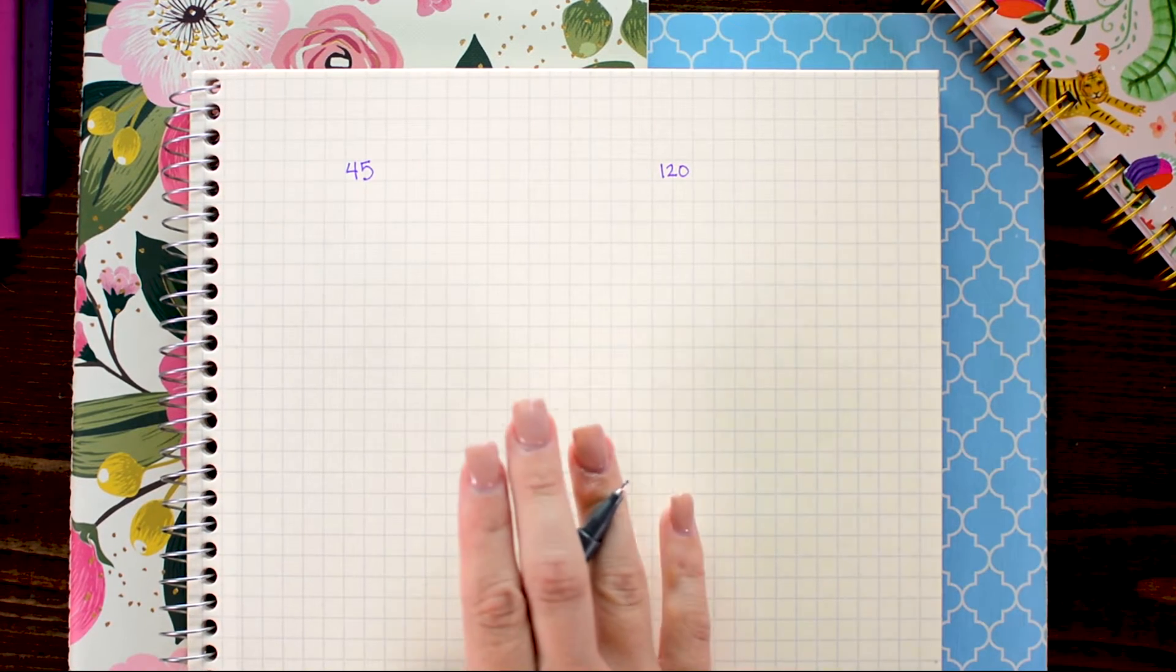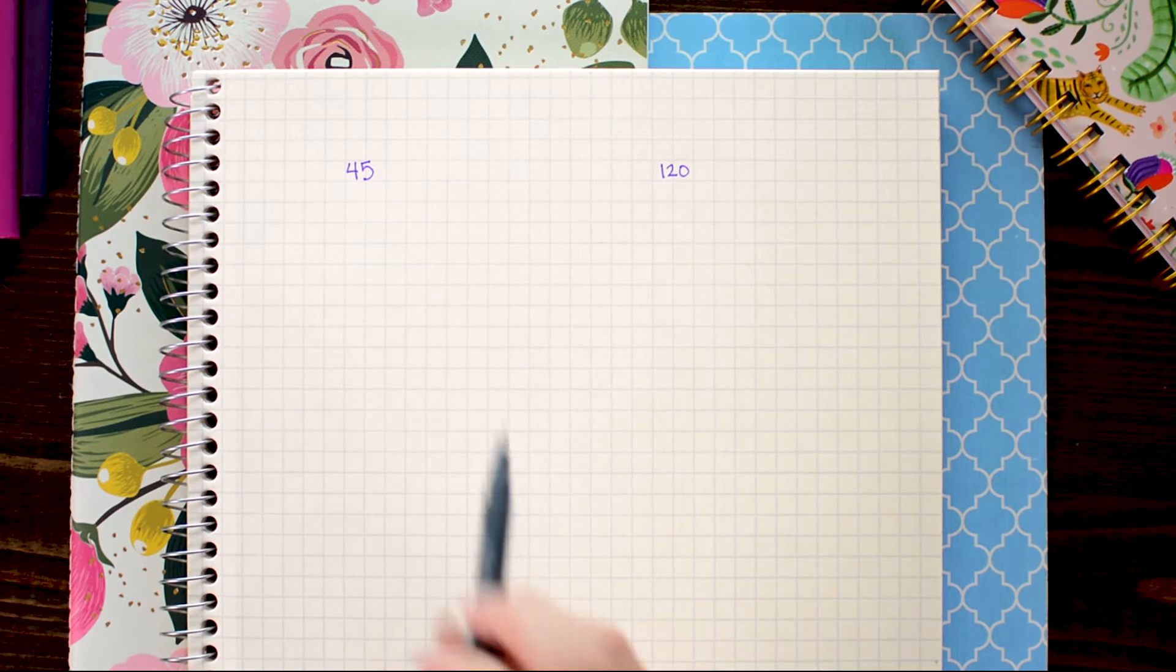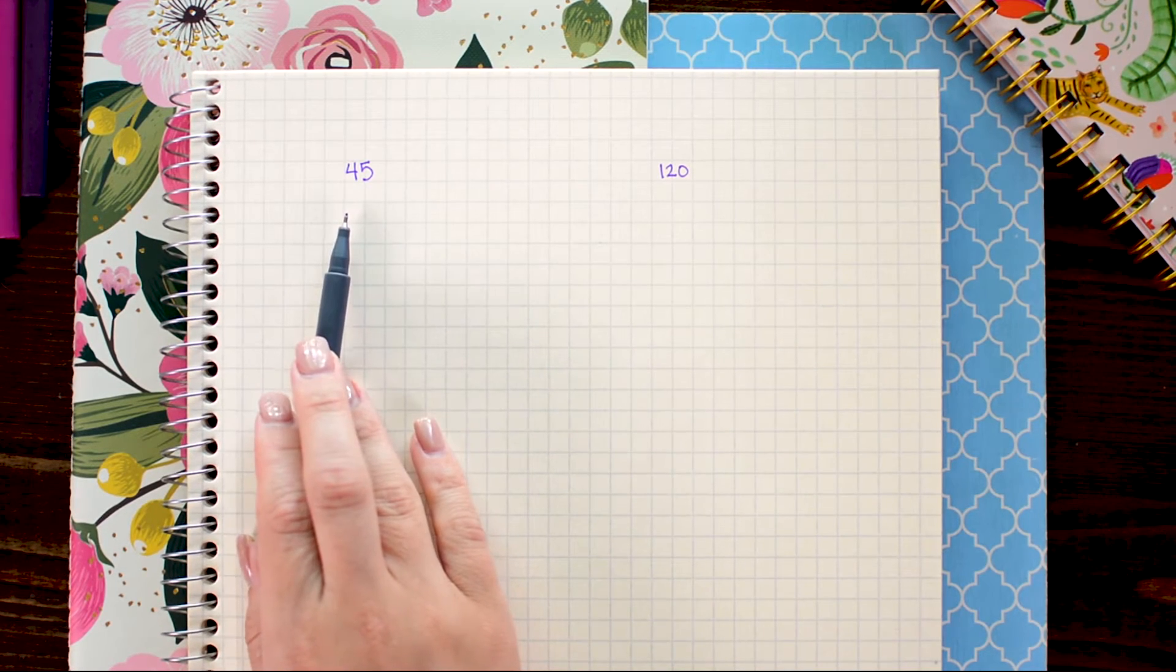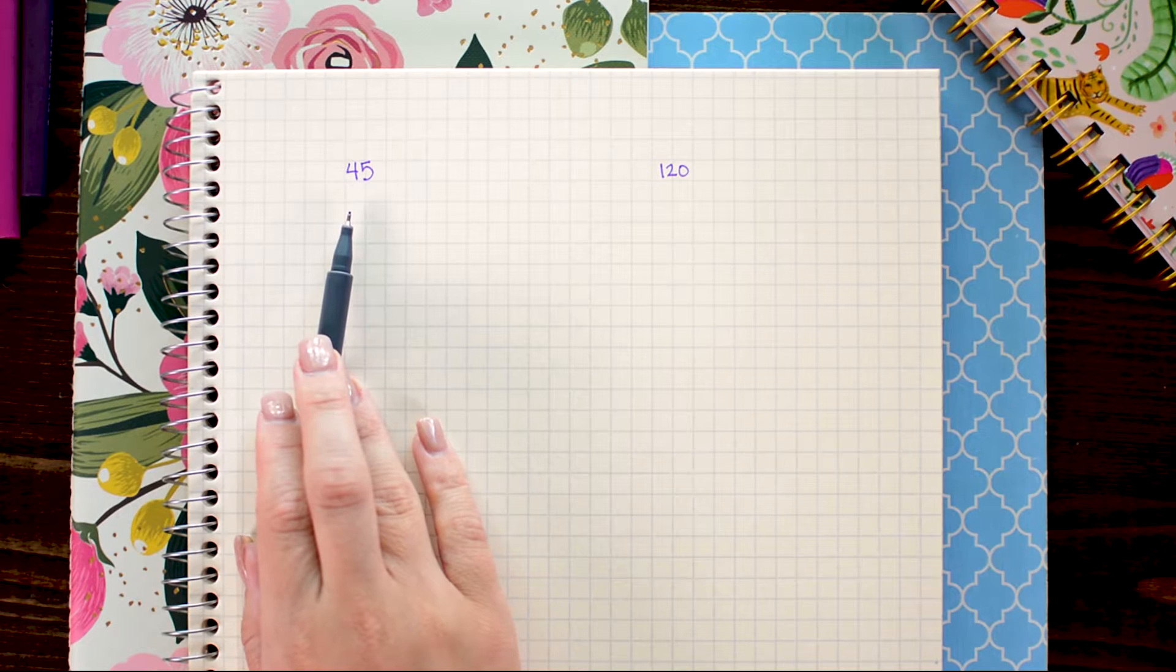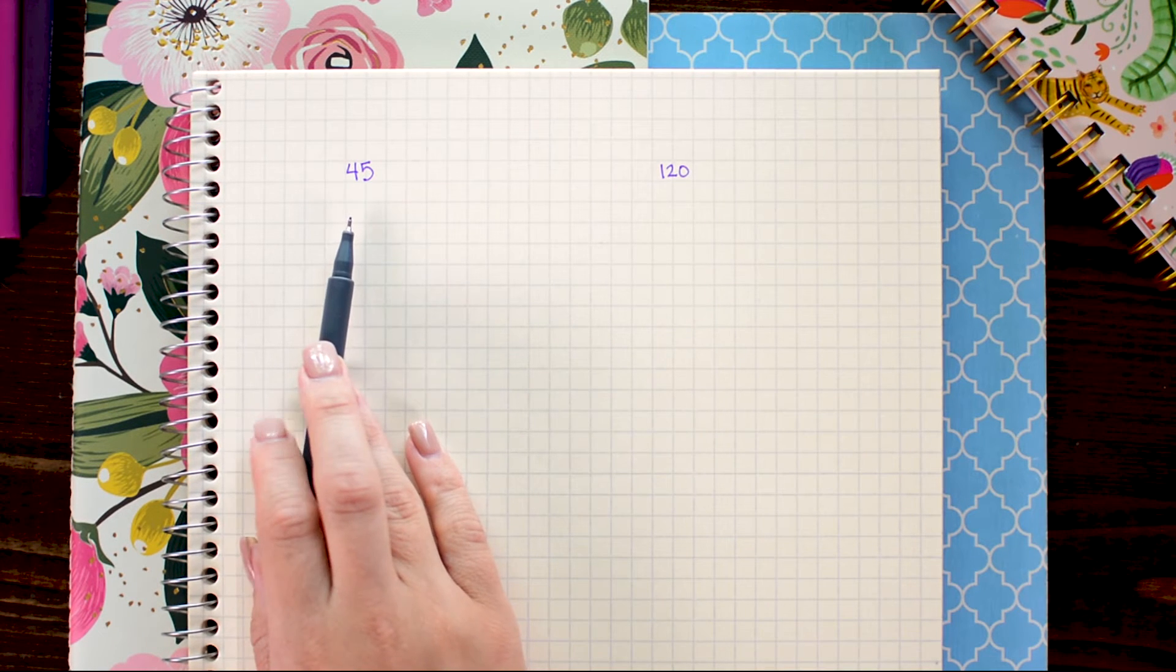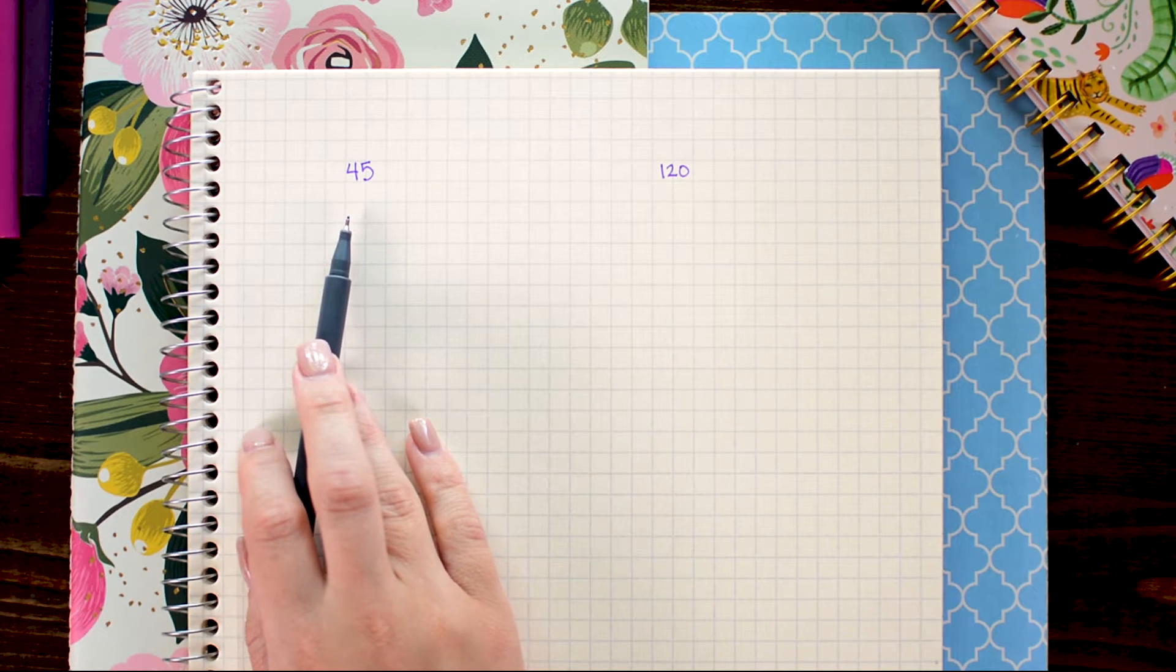All the factor tree is is breaking down your number into its prime components and you can think of the prime components as the building blocks of every number.